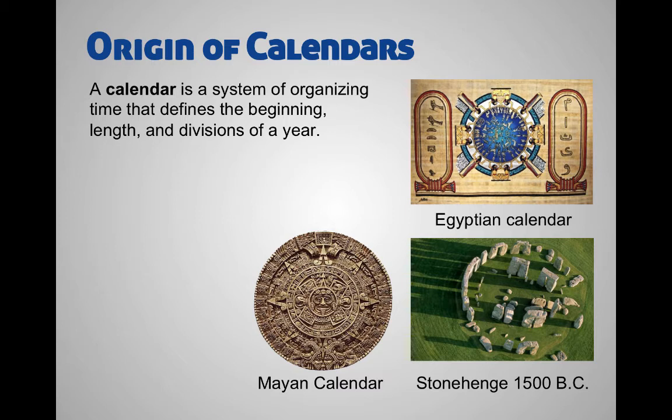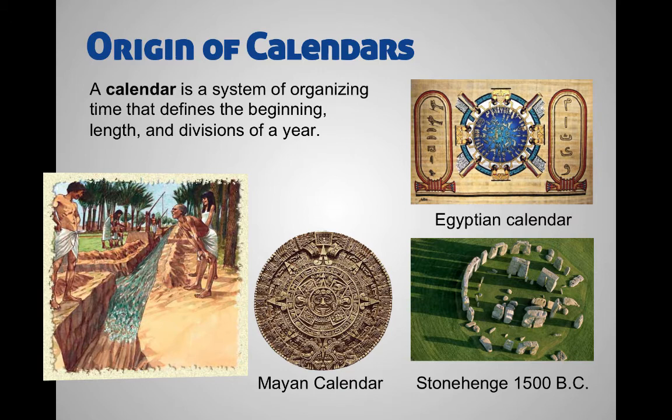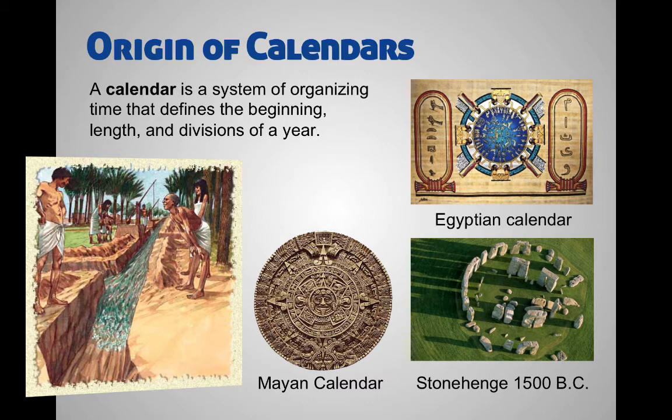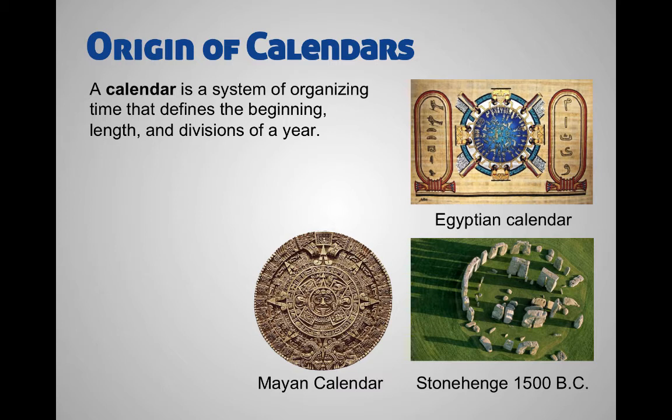Why might it be important for these people to be keeping track of this? It's important because they needed to know when these big events during the year are going to happen — things like floods, monsoons, dry spells. This is important for them when it comes to planting crops, knowing when they should be growing their food. These are all cyclical events, and the fact that these calendars are all circular indicates that they knew about this cycle, that it happened year after year, on and on forever.